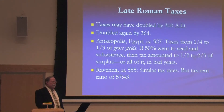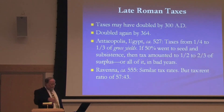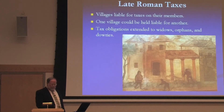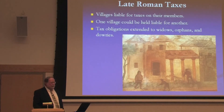The tax system assessed every field across the empire and also assessed individuals. There was a poll tax on every individual. Localities were expected to provide men for the army — they didn't exactly have a draft, but each locality was simply expected to put up a number of young men every year. If taxes didn't get paid, villages were held liable for the taxes on their members. One village could even be held liable for another. The government never gave up — tax obligations were extended to widows and orphans, and even to dowries.